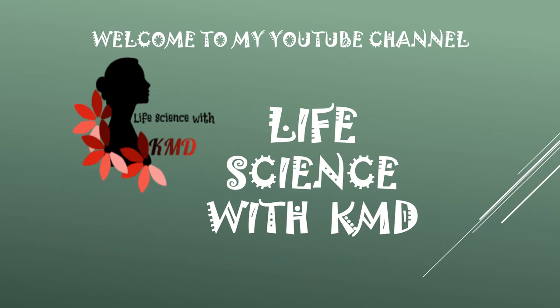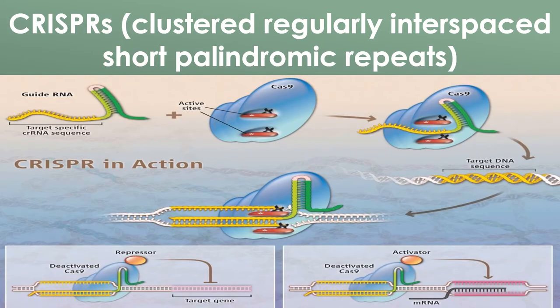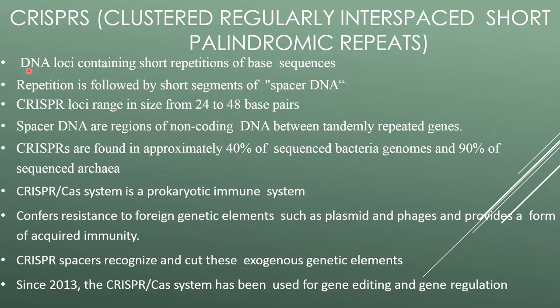Welcome to Life Science with KMD. Today I'm going to explain about CRISPR, which is also called Clustered Regularly Interspaced Short Palindromic Repeats. The DNA loci contains short repetitions of base sequences, followed by short segments of spacer DNA. CRISPR loci range in size from 24 to 48 base pairs. The spacer DNA is a region of non-coding DNA between tandemly repeated genes.